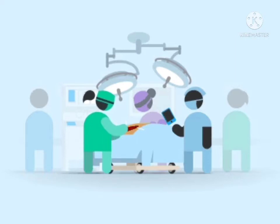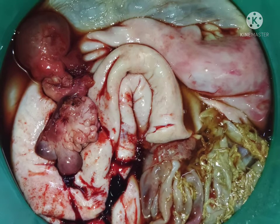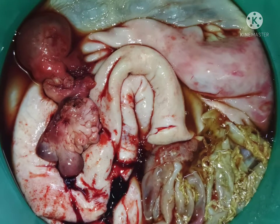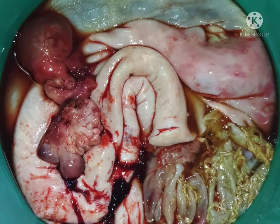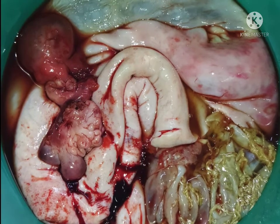Surgical pathology involves the examination of tissue and organs from living patients. The pathologist examines the tissue, determines the cause of disease, and prepares a report.